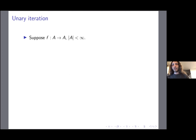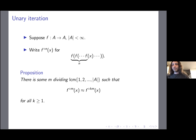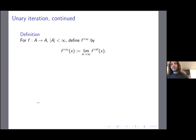Unary iteration is something you can do to a one-variable function. Suppose we have some one-variable function on a finite set. We use the notation f∘n for f composed n times. The basic fact is there is some finite m so that composing f m times and composing f km times is the same for all k. Then f composed infinitely many times is the pointwise limit of f composed n-factorial times as n goes to infinity.